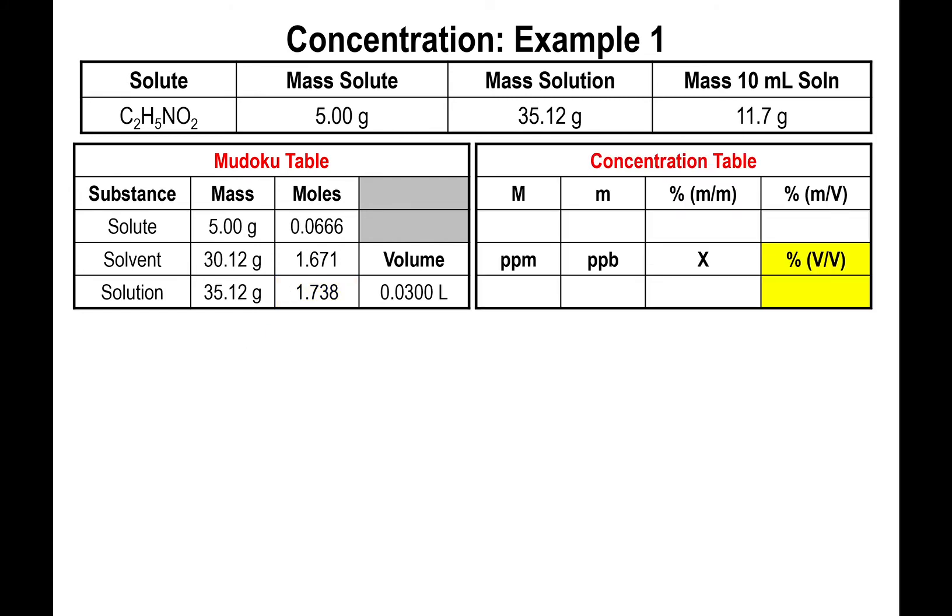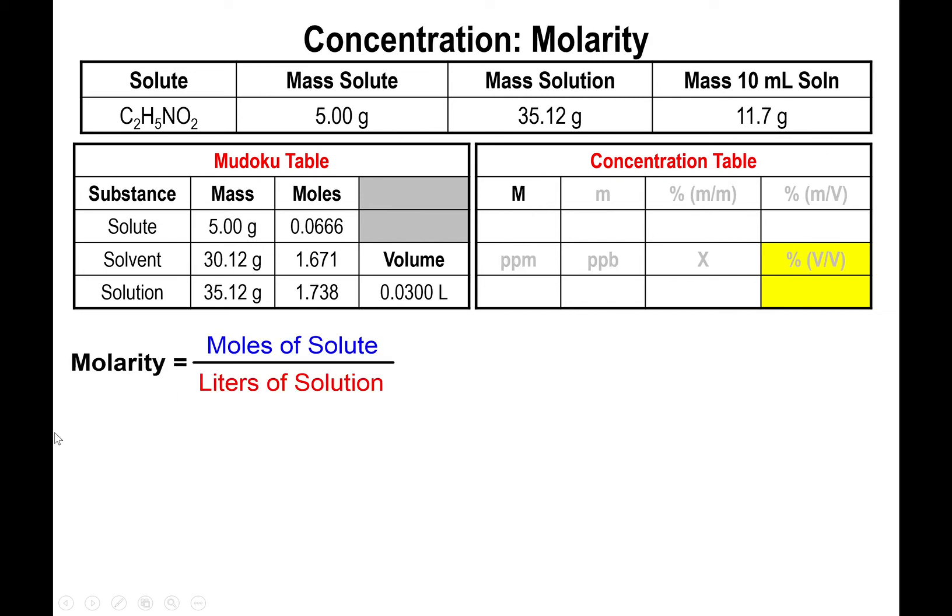Specifically, we have a concentration known as molarity. Now, this big M right here stands for molarity. And specifically, molarity stands for moles of solute over liters of solution. So what you want to do is divide the moles of the solute by the liters of solution. Not mLs, but actual liters. So we're going to have 0.0666 moles divided by 0.03 liters. And when you carry the calculation, you find out that the molarity, which by the way you abbreviate with capital M, is 2.22. And that's the value for the molarity.